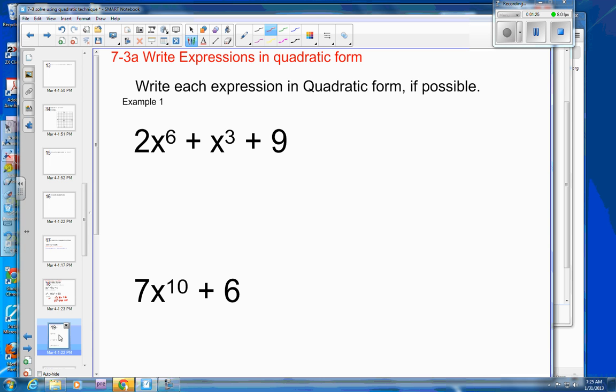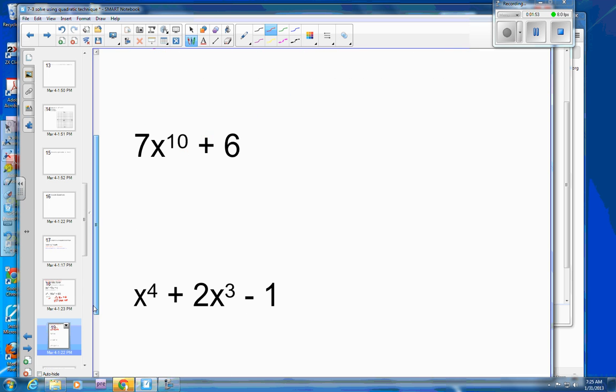So let's take a look at some of these. So this one, we've got to the sixth power, to the third power, and no variable over here. So this could be written as 2 times x to the third squared plus x to the third to the first, and then plus 9. And that would be rewriting it in quadratic form, and then you could use some of your quadratic techniques, which I'll get to in different examples.